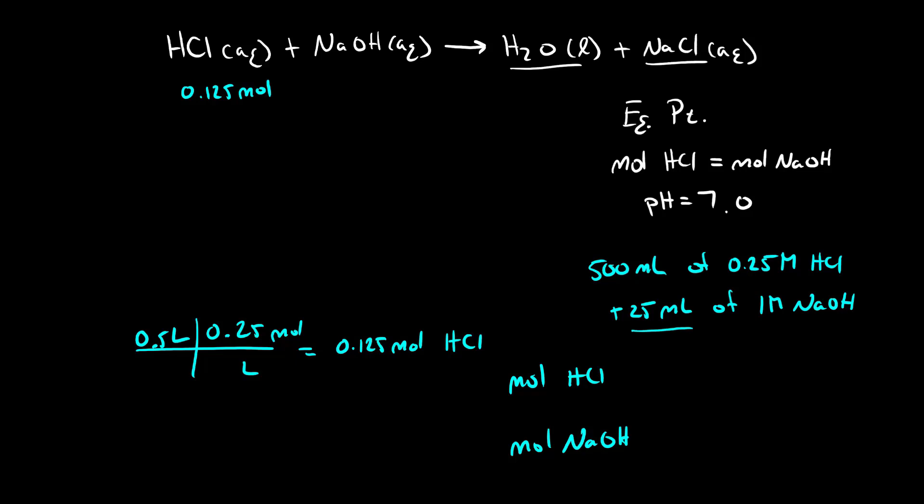Let's do the same for sodium hydroxide. I have 0.025 liters, 25 milliliters, and in this case I have one mole per one liter so this gives me 0.025 moles of sodium hydroxide.